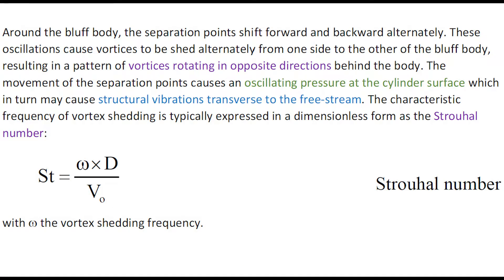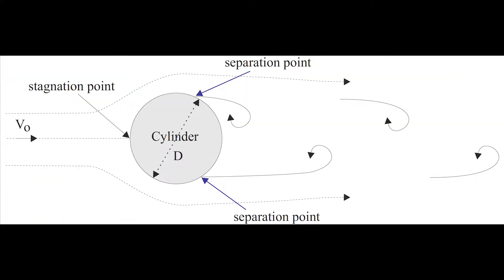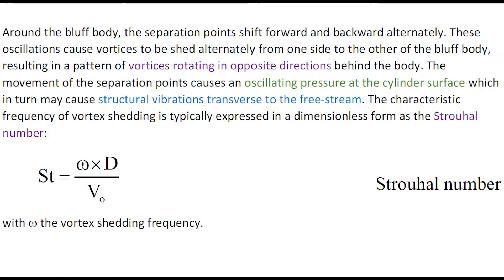Around the bluff body, the separation point shifts forward and backward alternately. This oscillation causes vortices to be shed alternately from one side to the other of the bluff body, resulting in a pattern of vortices rotating in opposite directions behind the body.